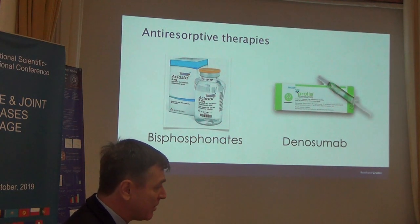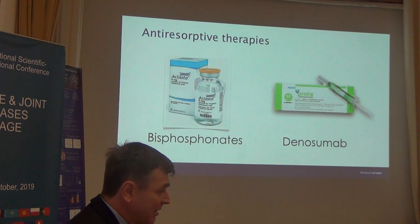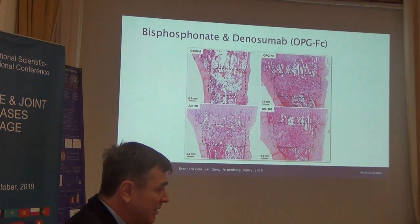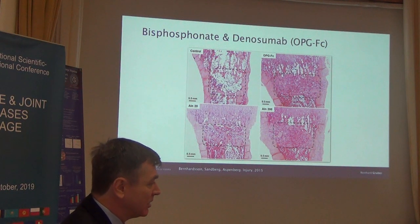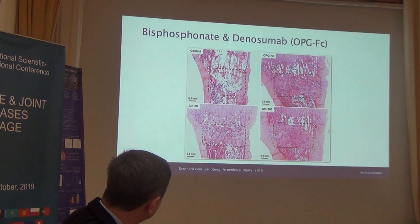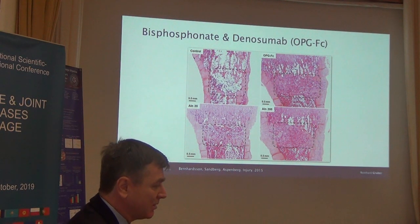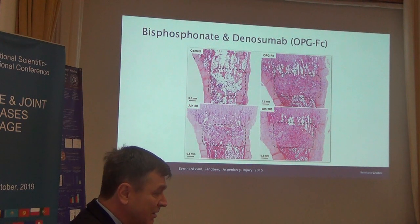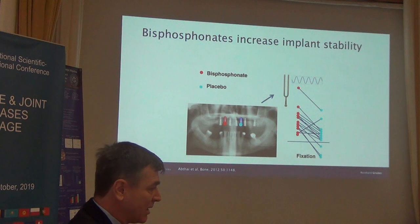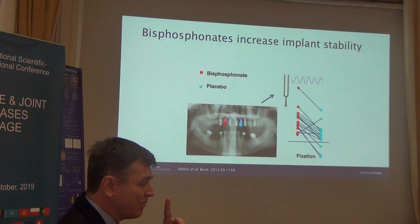What about anti-resorptive therapies — bisphosphonates, denosumab, and RANK ligand antagonists? Interestingly, when you drill a hole in a tibia and give these anti-resorptive drugs to a rat, you get more bone formation. The control shows less; denosumab analogue and ibandronate at two concentrations show more bone formation. So bisphosphonate and anti-resorptive therapies at least don't hinder — they even support bone regeneration. That may be one reason why some researchers think coating dental implants with bisphosphonates increases implant stability.